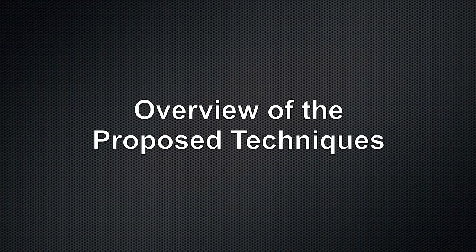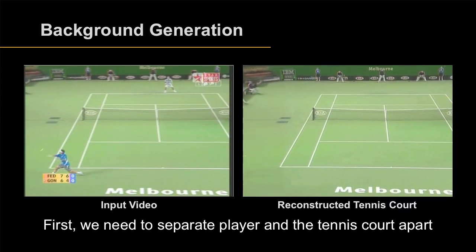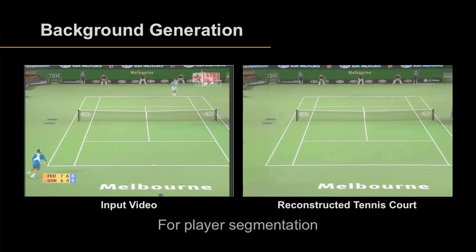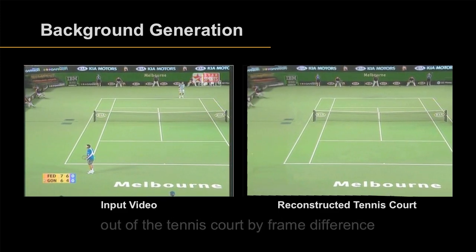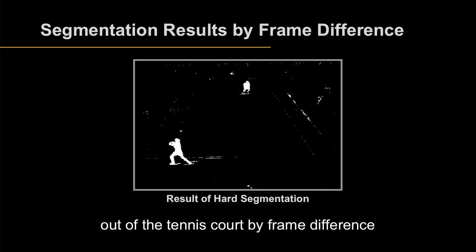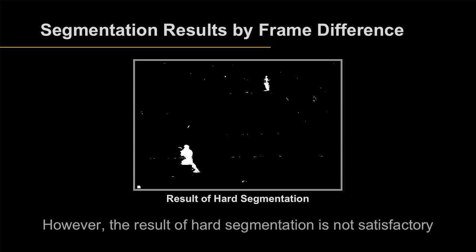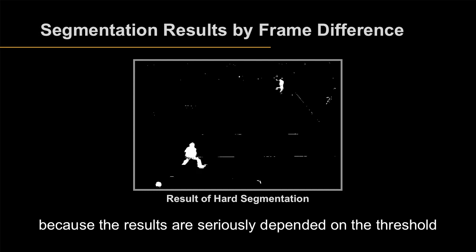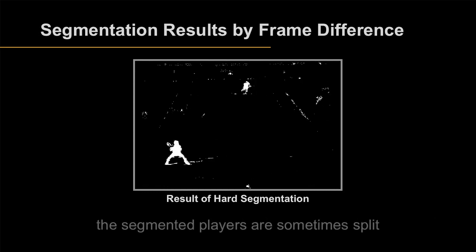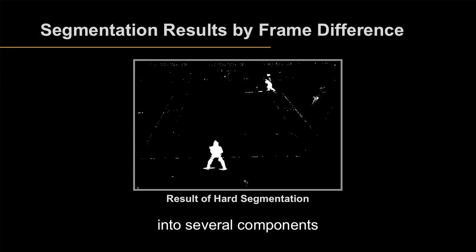Now we introduce the proposed techniques in Tennis Roleplay. First, we need to separate the player and the tennis court. For player segmentation, we reconstructed the tennis court and segmented the player out by frame difference. However, the result of hard segmentation is not satisfactory because the results are seriously dependent on the threshold, and thus the segmented players are sometimes split into several components.